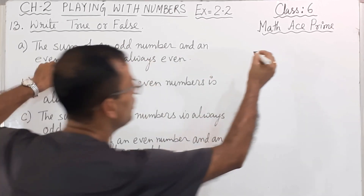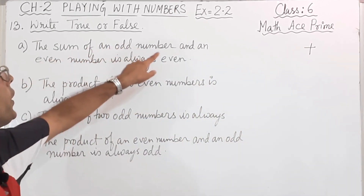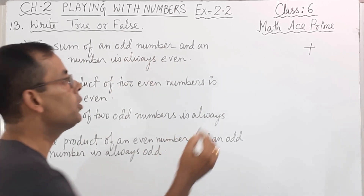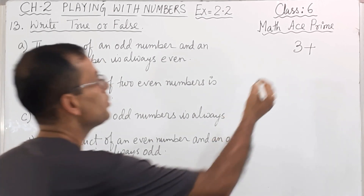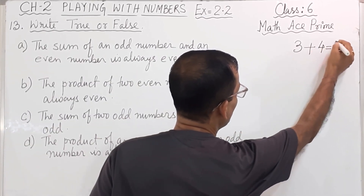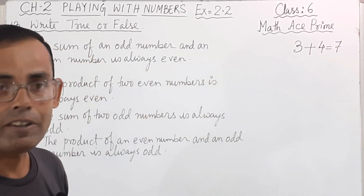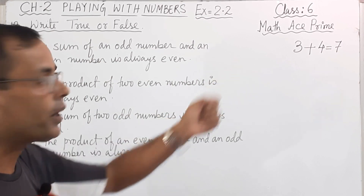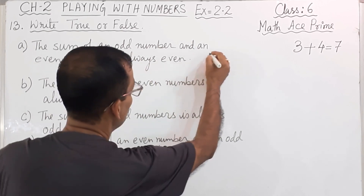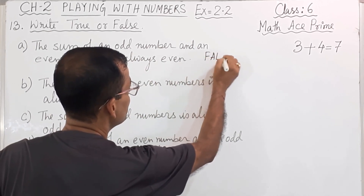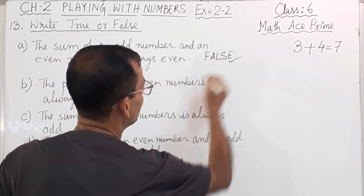Sum means addition. Let's do rough work. Take one odd number, say 3, and an even number, say 4. So 3 plus 4 gives 7. And 7 is an odd number, but the statement says it is always even. So this statement is false. We will write F for false.